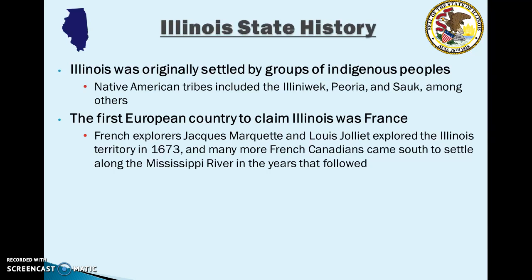The first European country to claim Illinois for its own was France. Two French explorers named Jacques Marquette and Louis Joliet explored the Illinois territory in 1673, and after they had made their original settlement, many more French Canadians would come south to settle along the Mississippi River in the years that followed.